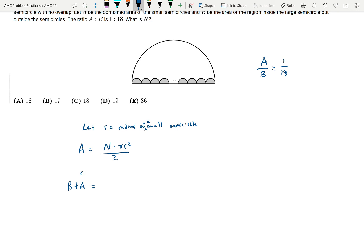First the radius of the large semicircle. Notice it's going to be equal to the number of small semicircles times R.